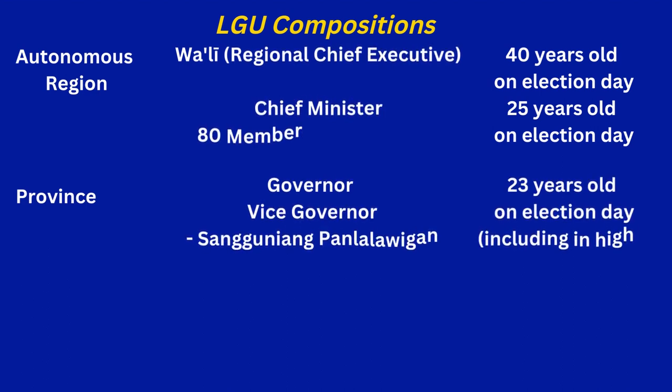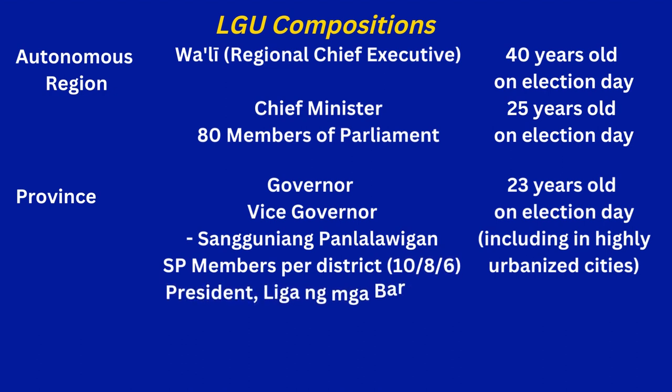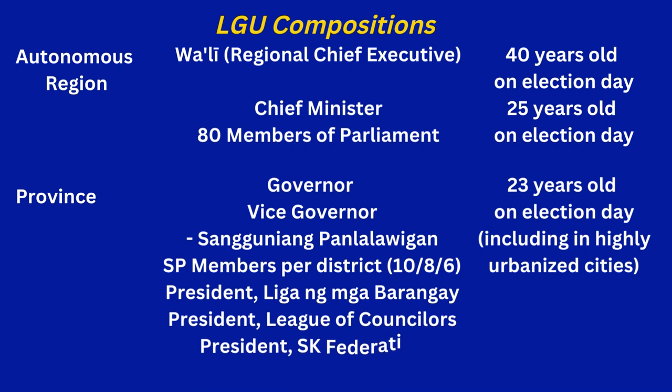Regarding age requirements before being elected, for the autonomous region the regional chief executive (WALI) must be 40 years old on election day, and the chief minister and other members of parliament must be 25 years old on election day. For the province, the governor and vice governor, including the Sanggunian Panlalawigan members, must be 23 years old on election day, including those in highly urbanized cities. The composition of the Sanggunian Panlalawigan includes the president of the Liga ng Barangay at the provincial level, the president of the League of Councilors at the provincial level, the president of the SK Federation at the provincial level, and sectoral representatives.